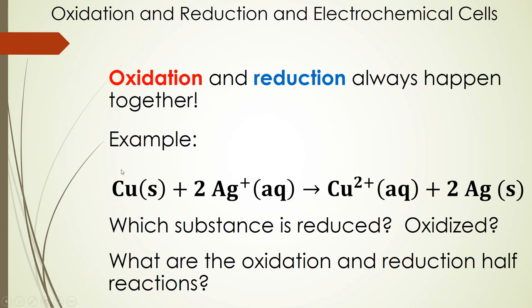So here's an example reaction. We have copper solid and it's going to react with two moles of silver ion, silver plus one ion in solution, and during that reaction we're going to get copper ions. The copper solid will be converted to copper 2+ and the silver ions are going to become silver metal. We have to think about this: which substance is reduced and which one's oxidized? We'll look at that on the next slide and we also want to look at the oxidation and reduction half reactions in this process.